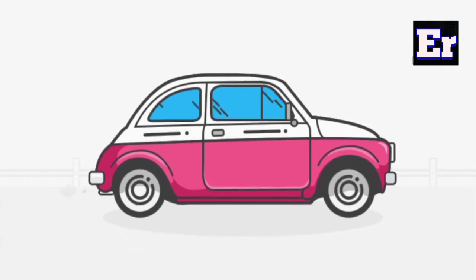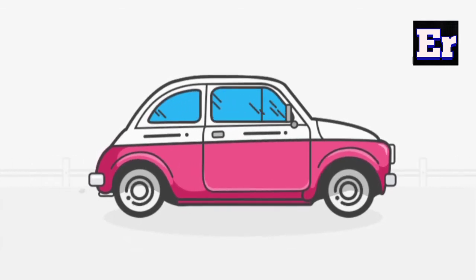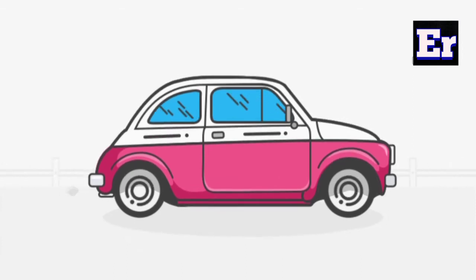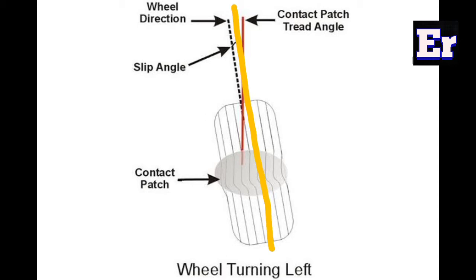Here we are going to look at how slip angle helps provide self-aligning torque. We know that slip angle is caused by the distortion of the contact patch of the tire, which leads to the tire deviating from the path parallel to the plane of the tire. The deviation angle between these two lines is called the slip angle.